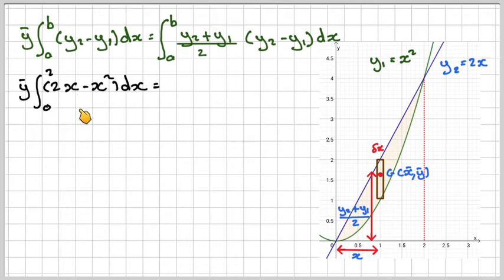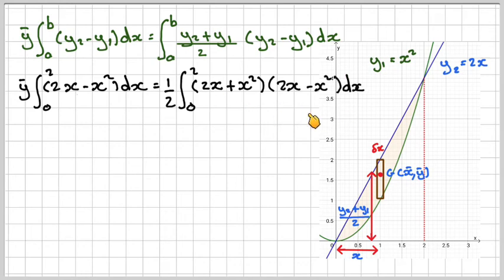So y-bar times the integral of 2x minus x squared dx equals the integral of a half of 2x plus x squared times 2x minus x squared. From here I've taken the half out. So here we've got the difference of two squares, like the factorisation of it. So that will be easy to work out. But it doesn't always happen. Look out for shortcuts, though.